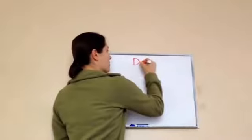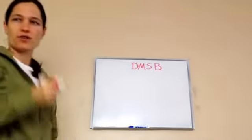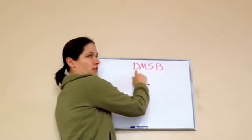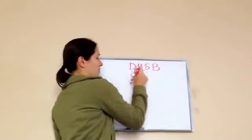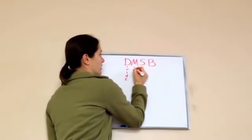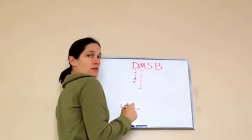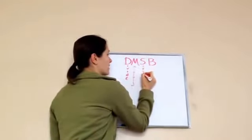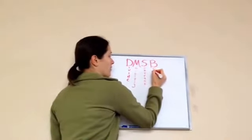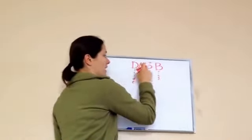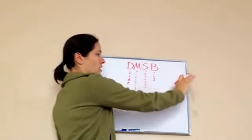Remember the dad, mom, sister, brother? We kind of reviewed this a few lessons ago. But what does the D actually stand for? Divide. What does the M stand for? Multiply. Very good. What does the S stand for? Subtract. And what does the B stand for? Bring down. Now we use this — dad, mom, sister, brother — just to help you see kind of how it goes in a family.